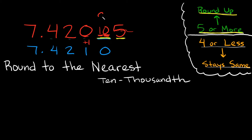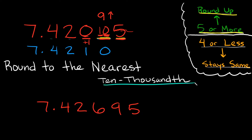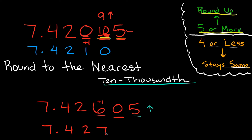The main point is: whenever you have a nine and you end up having to round it up, it turns into a ten and affects two place values — the one it was in and the one to the left of it. Let me rewrite this with a slightly different number to make sure you understand. Say we have seven point four two, then six nine five. If we're rounding to the nearest ten-thousandth, the five makes it round up. So this nine turns into a zero, and we add one to the number to its left: six plus one equals seven. The answer would be seven point four two seven zero.